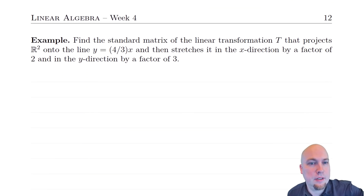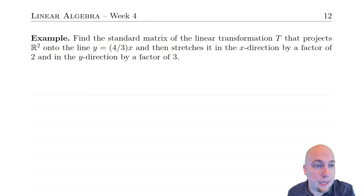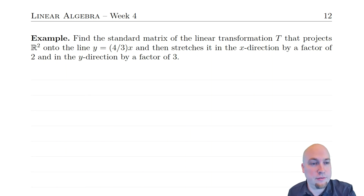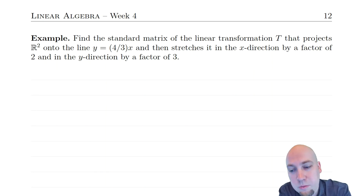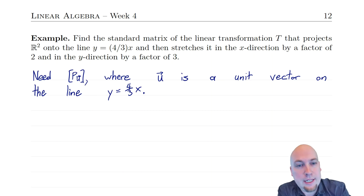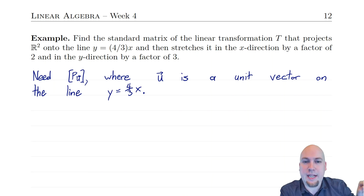Let's do another example. This time we're going to find the standard matrix of a linear transformation that first projects onto some line and then stretches in the x direction and the y direction by different amounts — specifically stretching in the x direction by a factor of 2 and in the y direction by a factor of 3. So it's going to do these two different things one after another again. We need to find the standard matrices individually: the standard matrix of the projection onto the line, and the standard matrix of the x and y stretch.